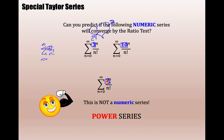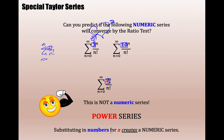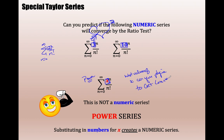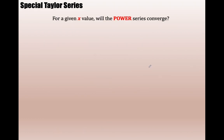I want to be careful and choose x values that give me convergent series. This is what AP loves. When I am given a power series and I substitute numbers in for x, it creates numeric series, and it would be awesome if I knew that whatever number I plug in gives me a convergent series. So I want to give somebody a power series and then tell them which values of x can be plugged into it to get a convergent numeric series.